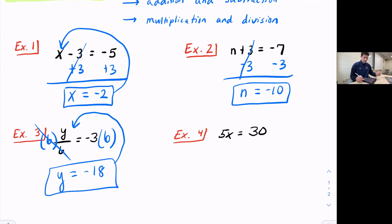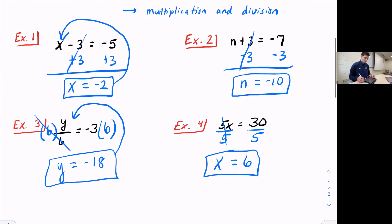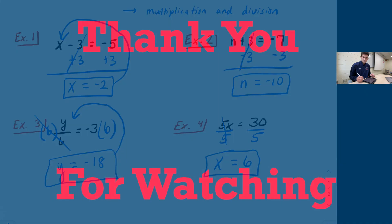Last example, 5x equals 30. So when we have a number and a variable next to each other, that implies multiplication is happening. So what's happening to x is being multiplied by five. To undo that, we divide by five, and we have to do that to both sides. These fives will become one. So 1x, which is just x, and 30 divided by five is six. So if we check that, five times six equals 30. And that's how you solve simple equations.